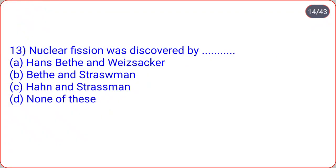The next: nuclear fission was discovered by? Options are Hans Bethe and Weizsäcker, Bethe and Strassman, Hahn and Strassman, none of these. So correct option is option C, that is nuclear fission was discovered by Hahn and Strassman.